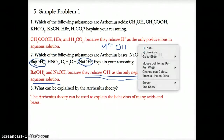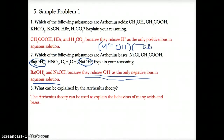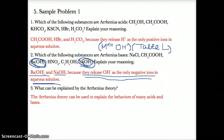Another way to tell is if the substance is on table L, which lists common bases. The only two Arrhenius bases in this list are NaOH and Ba(OH)2, because barium hydroxide and sodium hydroxide are listed as common bases on table L and they release OH- as the only negative ions in aqueous solution.